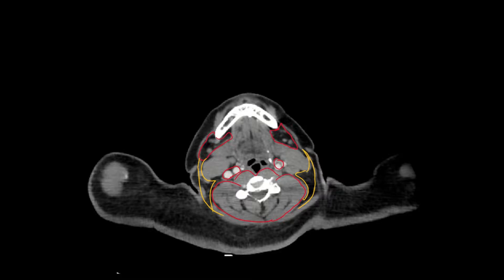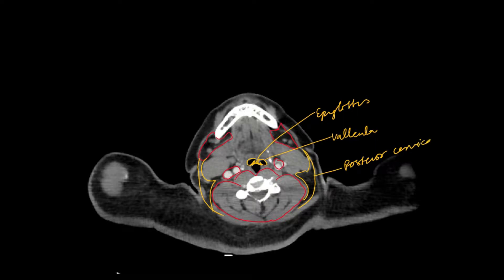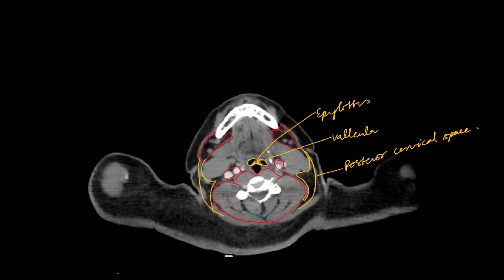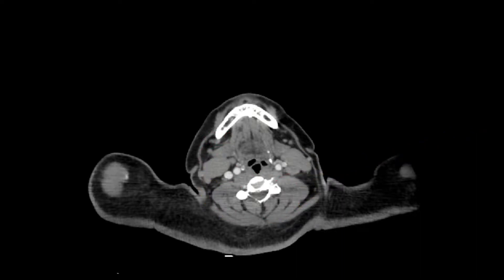You also need to look at this — this is the epiglottis, and these are the valleculae, these two small things. And this was the posterior cervical space. If you're wondering where the anterior cervical space is, the more you scroll down you will see it. So we had: valleculae, epiglottis, carotid space, submandibular space, and the posterior cervical space.